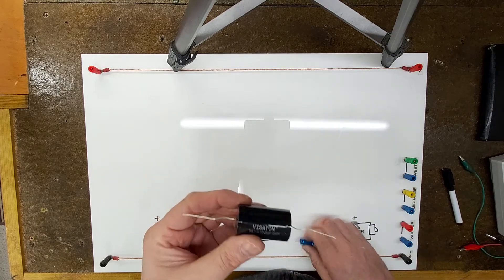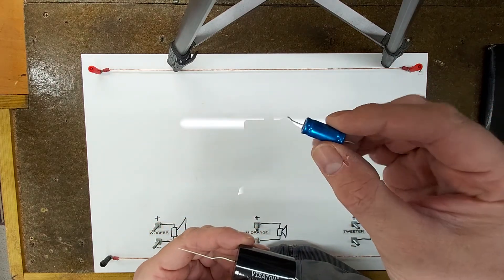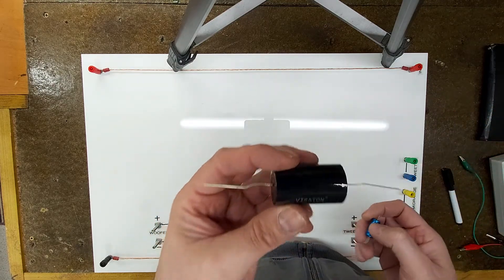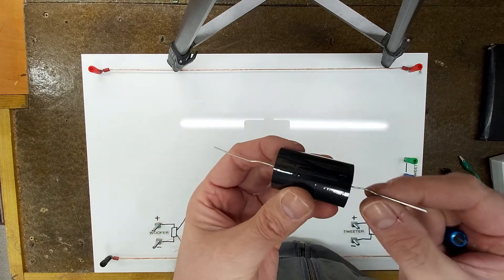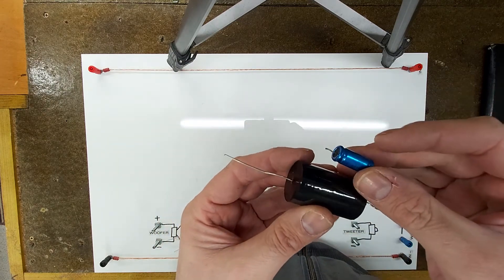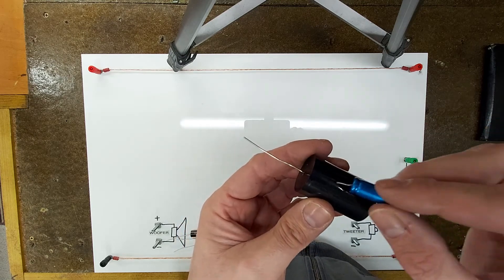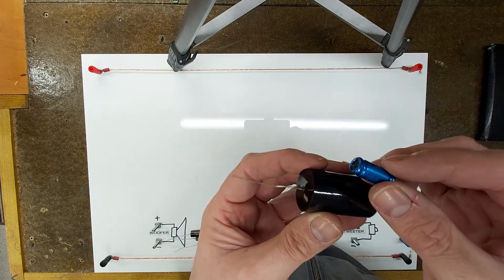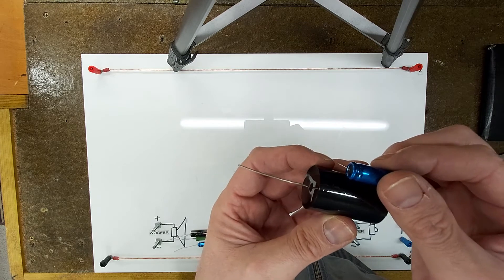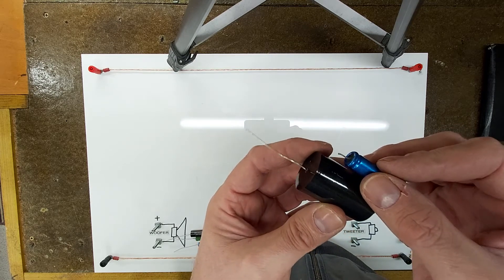So here we have a 20 microfarad electrolytic and a 20 microfarad polypropylene. As you can see there's quite a size difference there. As well as having a capacitive value, these also have internal resistance characteristics and they are very different.